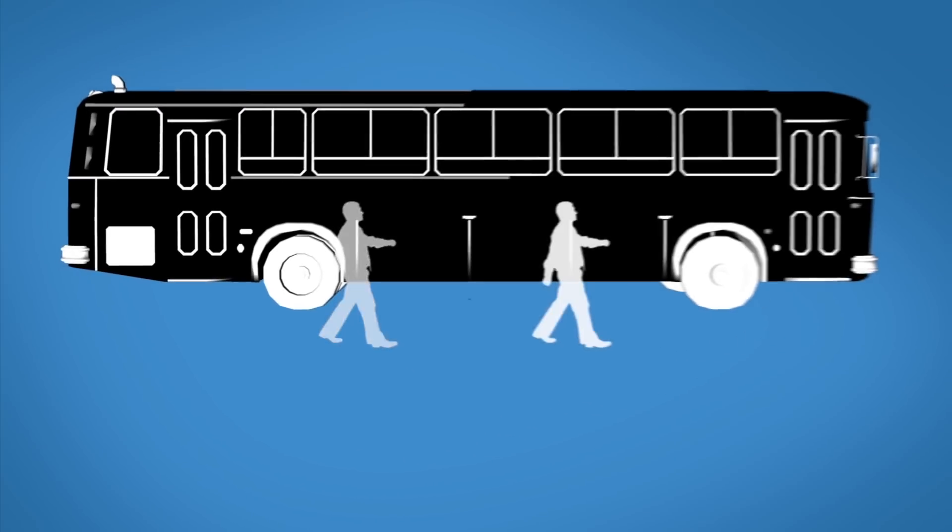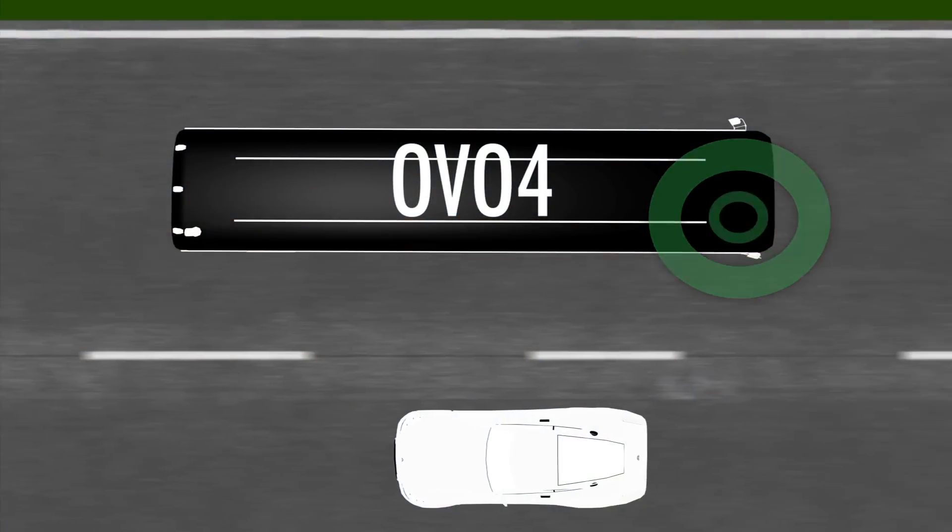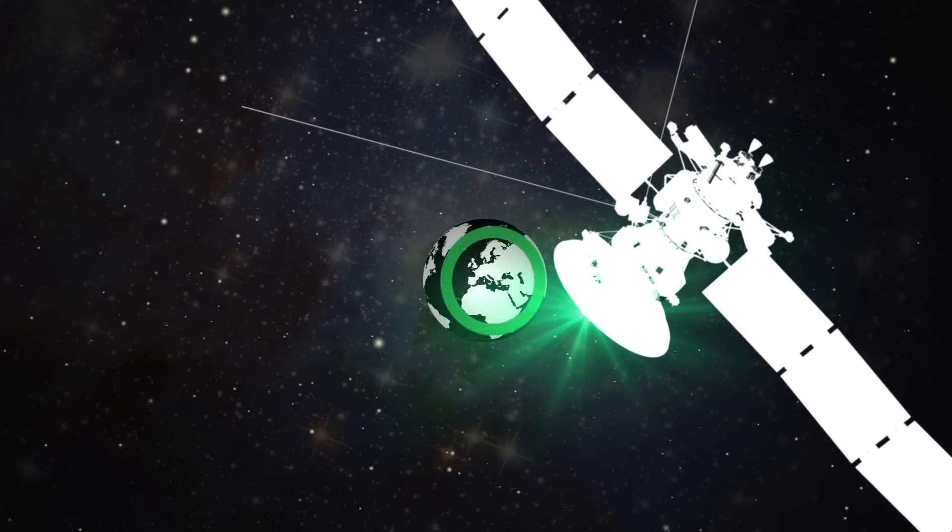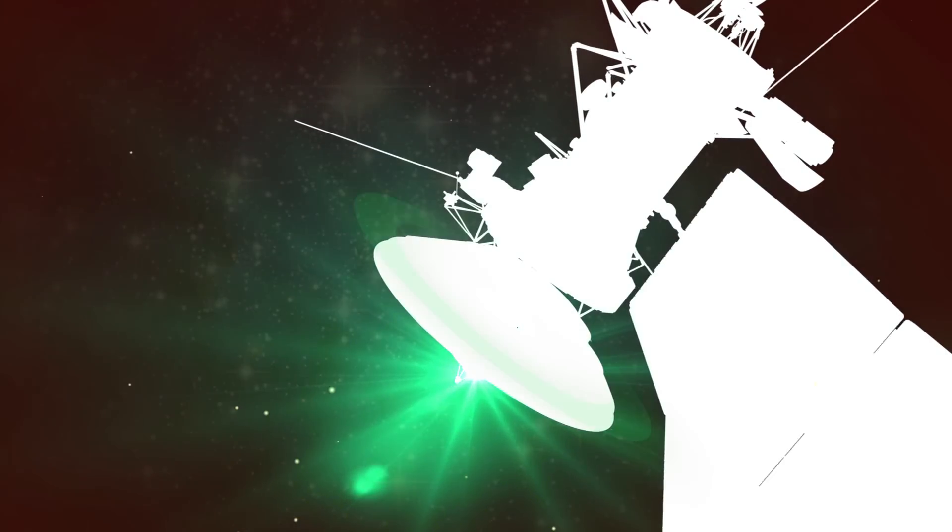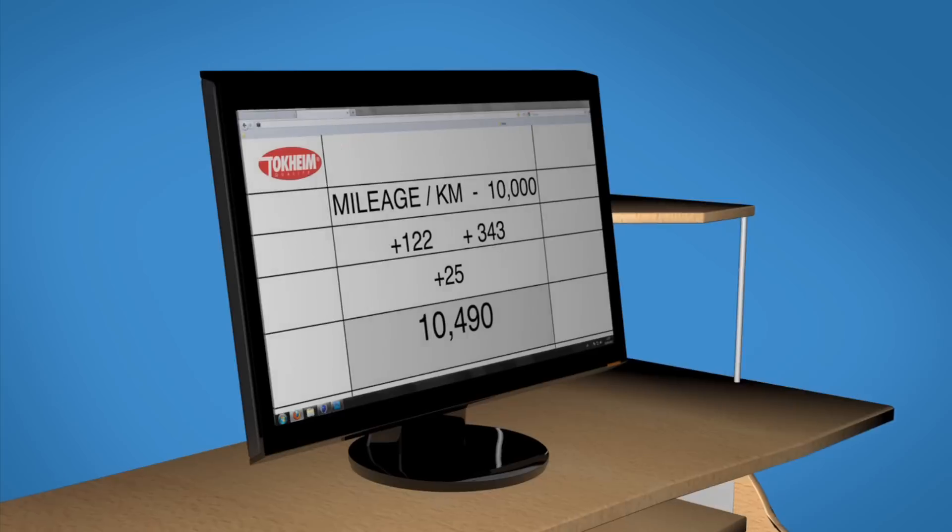SmartFuel overcomes this through a powerful feature that allows you to automatically collect all the vehicle mileage data. This feature is enabled by mounting a GPS system to the vehicle. This captures all the mileage data. The operator can then view this information on his or her computer.